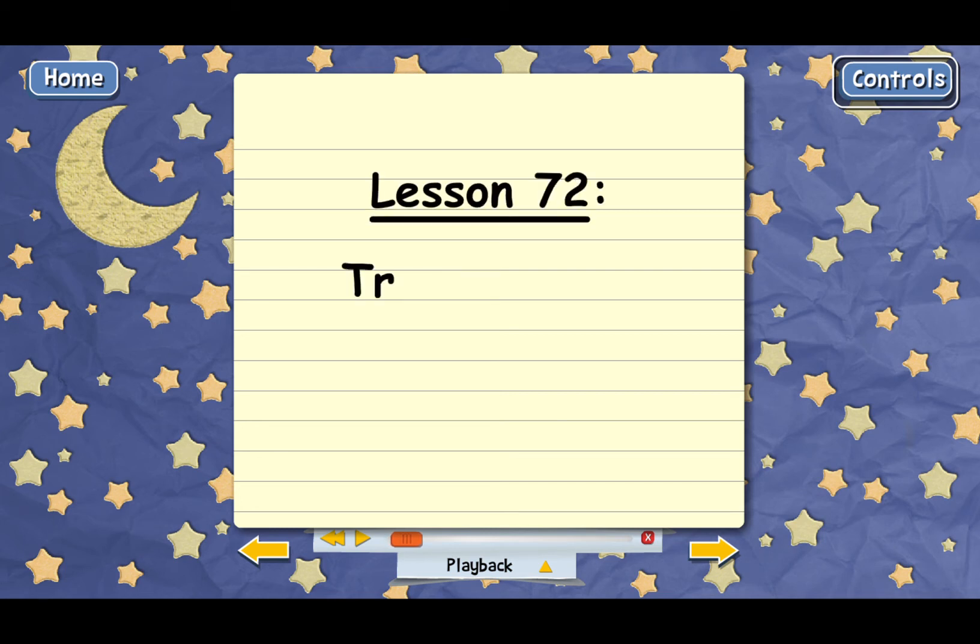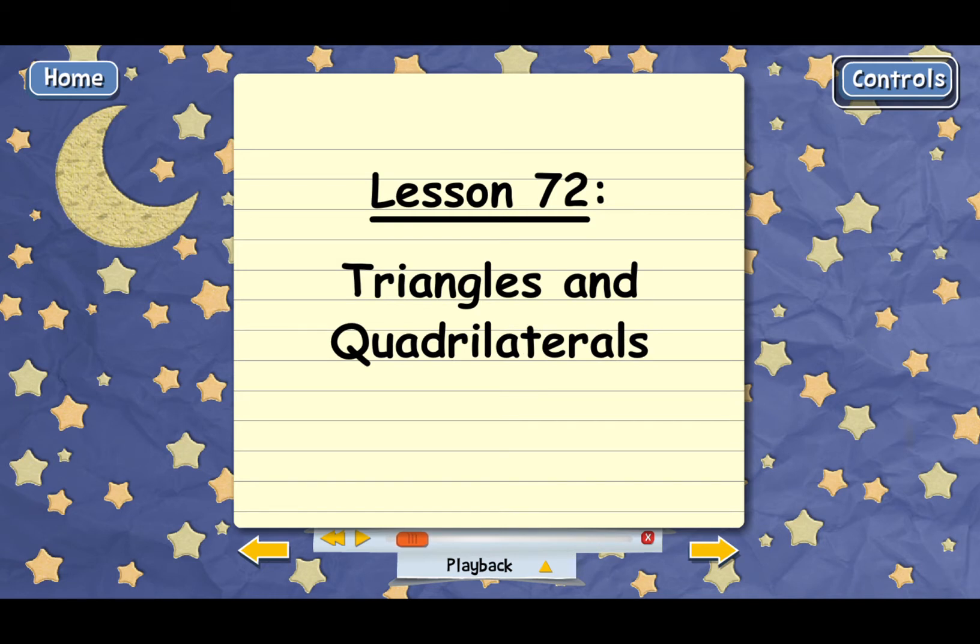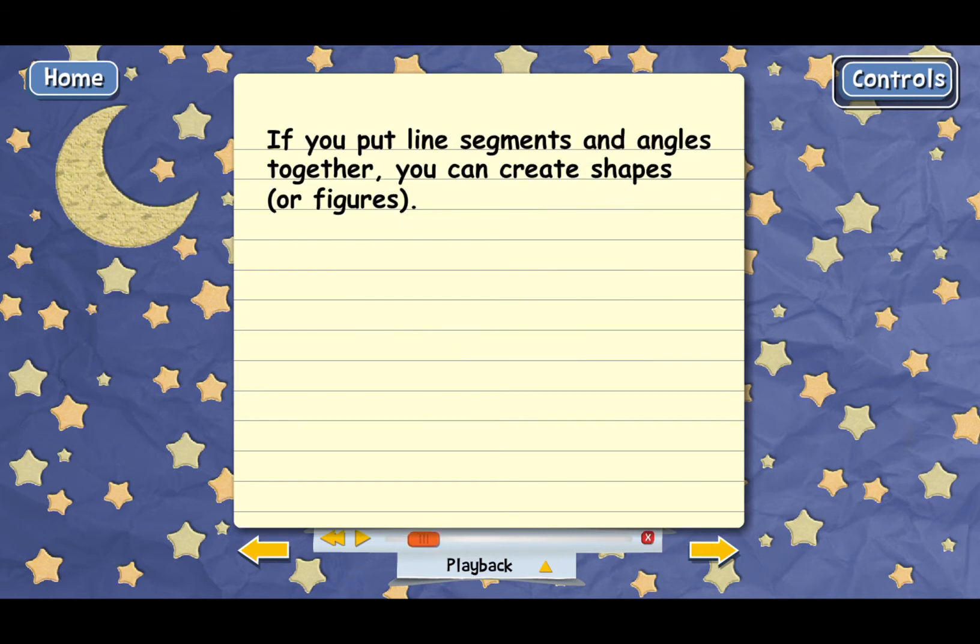Lesson 72: Triangles and Quadrilaterals. We've learned about line segments and angles. When we put those together, we can create all sorts of shapes or figures. Figures is just the name that we use for a shape.